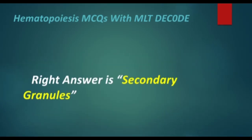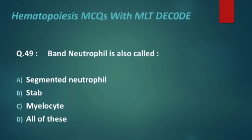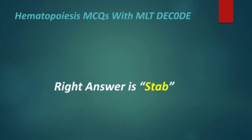Next, MCQ 48: Band neutrophil is also called? Options are: segmented neutrophil, stab, myelocyte, and all of these. The right answer is stab.